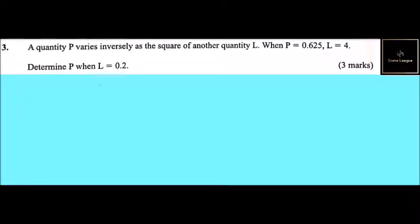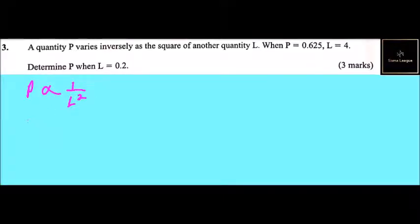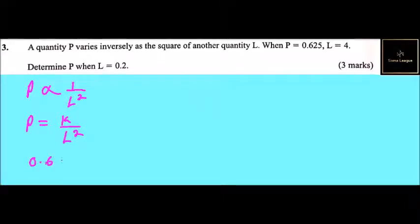From the statement we have been given, we have the relationship between p and l. P is inversely proportional to l squared, so we put it like that, which we can form an equation connecting the two: p is equals to k over l squared.